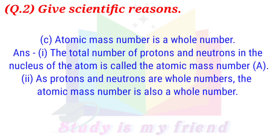Question 2C: Atomic mass number is a whole number. Answer: The total number of protons and neutrons in the nucleus of the atom is called the atomic mass number. As protons and neutrons are counted as whole numbers, the atomic mass number is also a whole number.